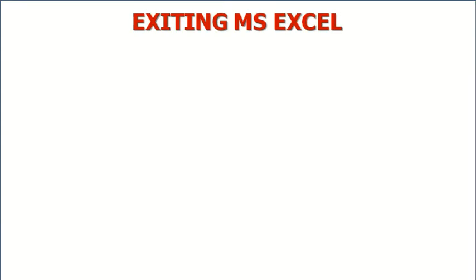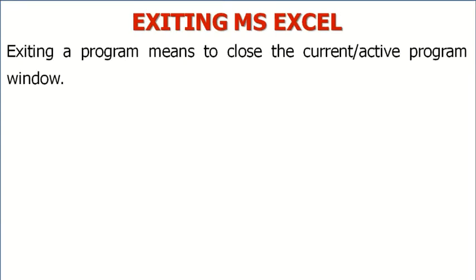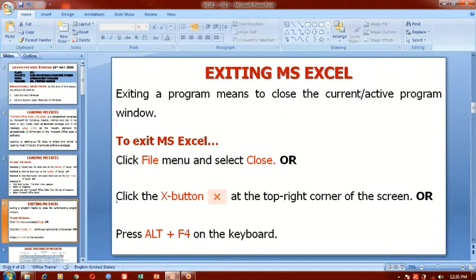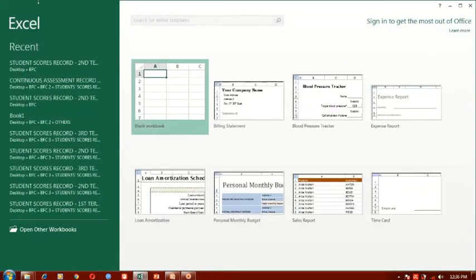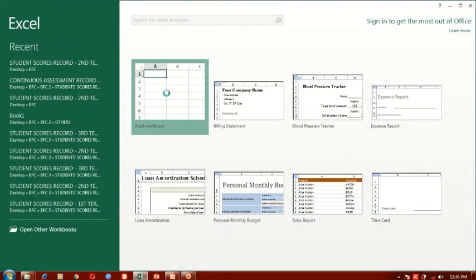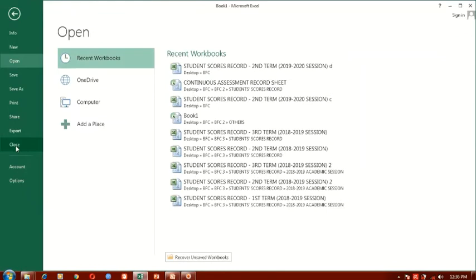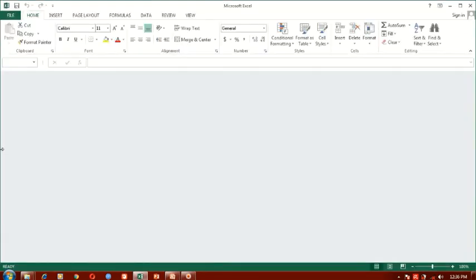Exiting MS Excel. To exit means to close a program, to close the current program window. To exit a program is very simple. You click the file menu and select close. Let's return to Excel and do just that. You can load your Excel here — how do you exit? It's the file menu and you select close. The program will close immediately.